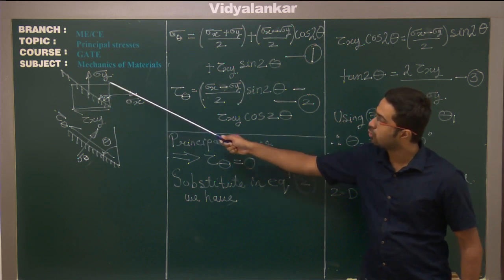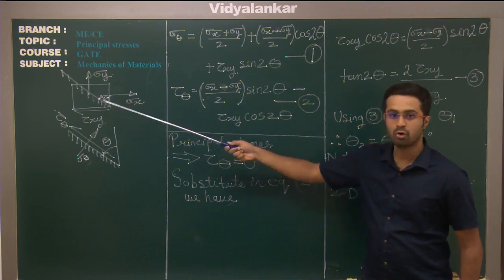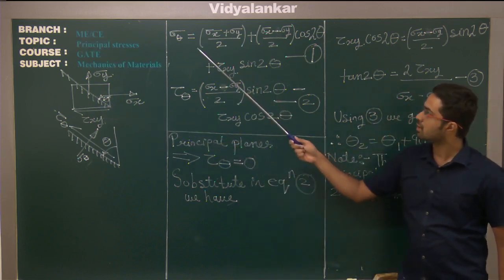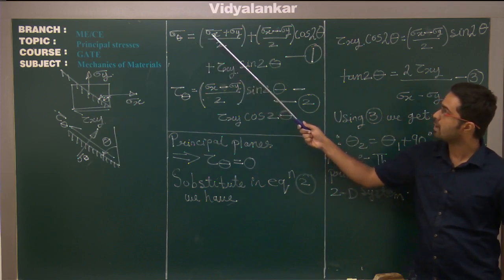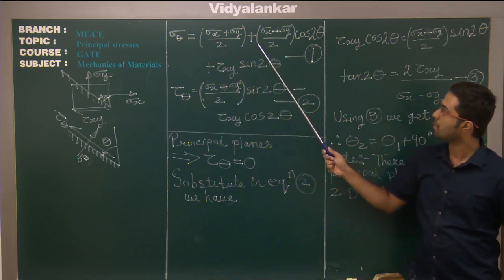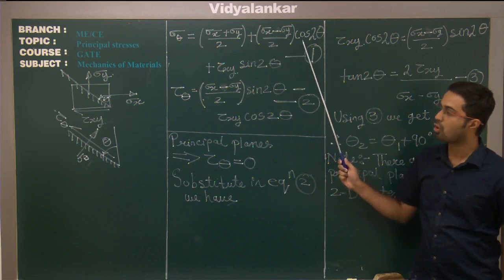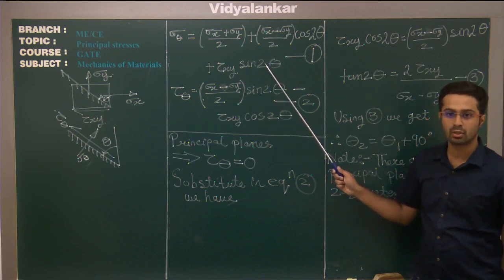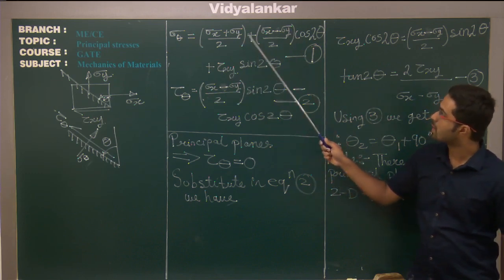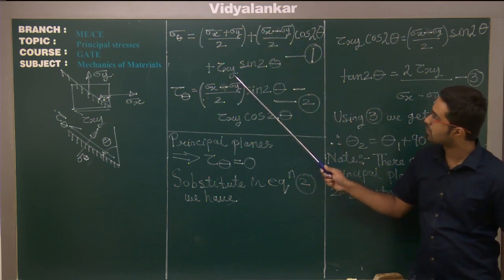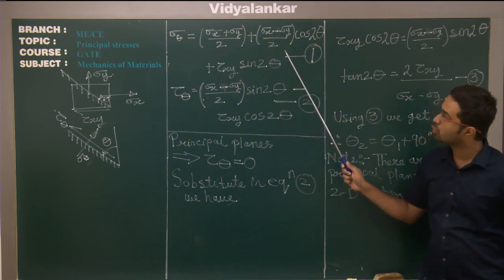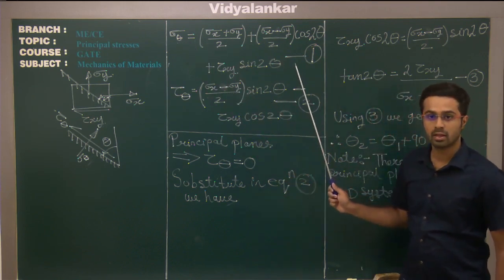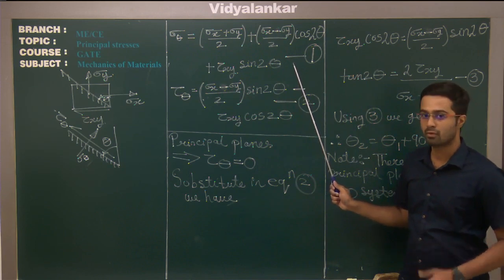Now how to do that? On any angular plane, if I want to evaluate sigma theta and tau theta, what is the formula for that? Well, sigma theta is equal to (sigma x plus sigma y)/2 plus (sigma x minus sigma y)/2 times cos 2 theta plus tau xy sin 2 theta. So knowing sigma x, sigma y, and tau xy, and knowing the plane on which you want to evaluate normal stresses, we can evaluate the normal stress acting. This is an important formula that one needs to remember.